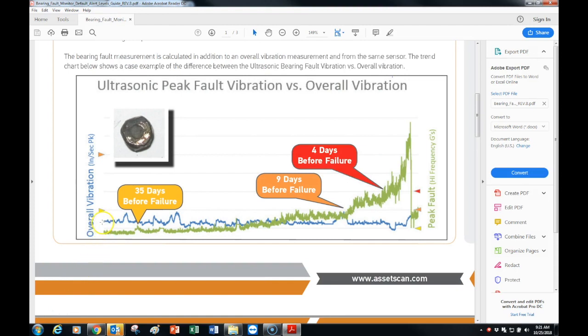So defining the scales and a little bit about this trend chart, the blue line is the overall vibration in inches per second peak. These alert limits are set at 0.2 inches per second peak and 0.5 inches per second peak for overall.